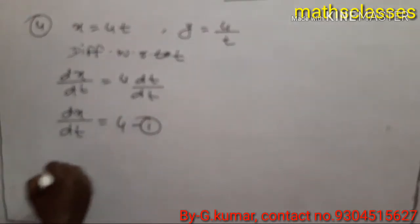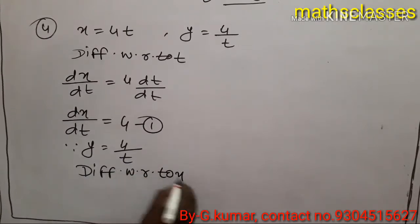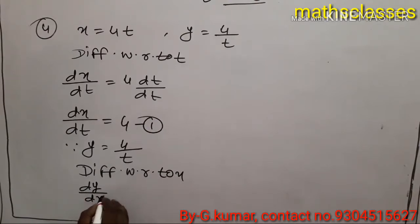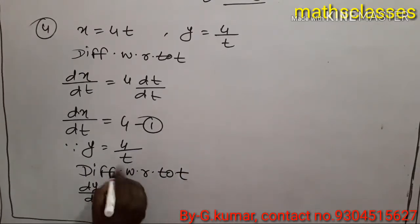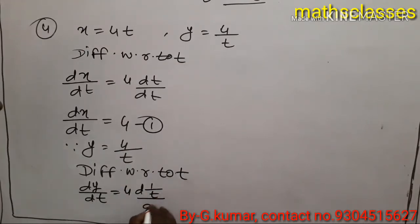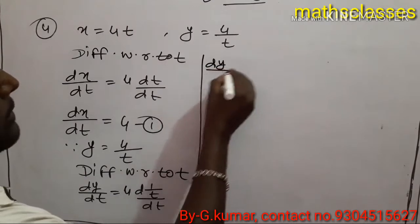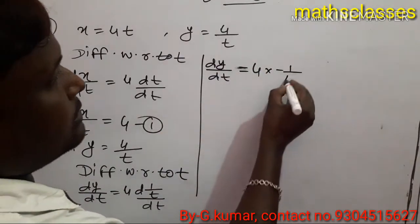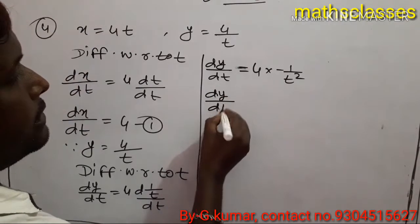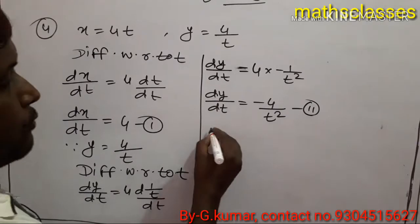Now since Y equal to 4 upon T, we differentiate with respect to T. So dy upon DT equal to 4 times d(1/T) upon DT. Taking 4 as constant, the derivative of 1/T is minus 1 by T square. Therefore dy upon DT equal to minus 4 by T square.